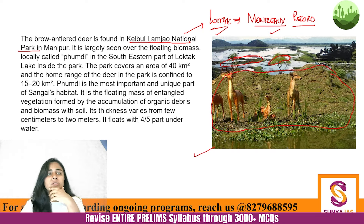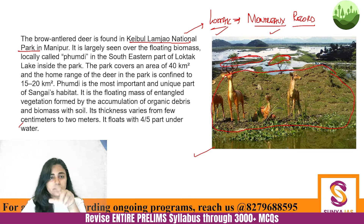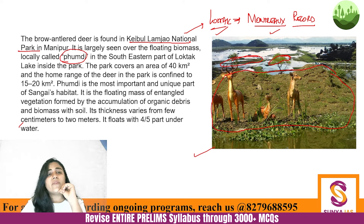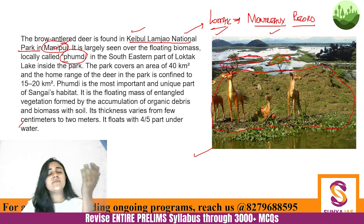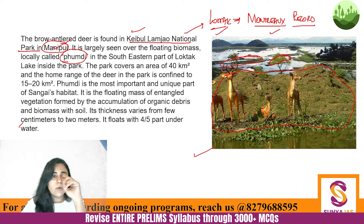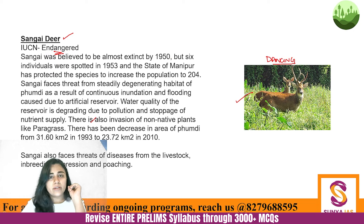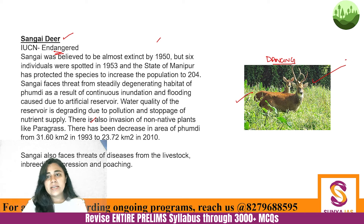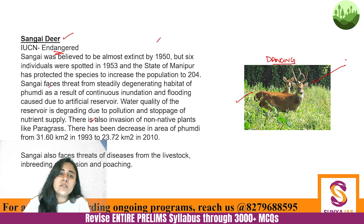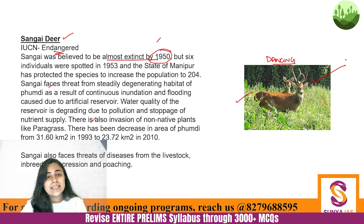The Montreux Record is a record of Ramsar sites that are critically endangered. Loktak Lake is listed there; Keoladeo Ghana National Park is also listed; Chilika Lake used to be there but is not anymore. Questions have been asked in various ways — what is fumri, where is fumri found (Manipur), where is Keibul Lamjao found (Manipur). The Sangai Deer is a very important species, and at one point it was believed to be almost extinct.